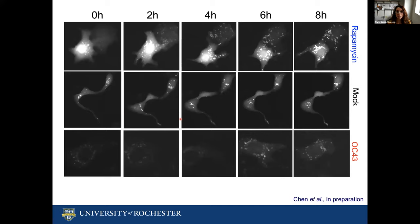These are some representative images of this study with three different experimental conditions. The first was cells treated with rapamycin — a drug that triggers autophagy, used here as a positive control. Mock-treated cells in the middle, and OC43-infected cells on the bottom. At time zero with no stimuli, we are already detecting autophagosomes depicted by these shiny dots. This is normal and expected — autophagy is very important for cellular homeostasis. Two hours after stimulating cells with rapamycin, we see a significant increase in autophagosome formation.